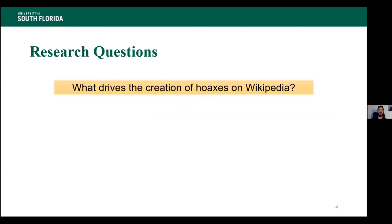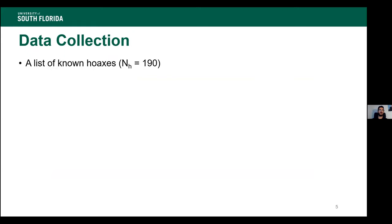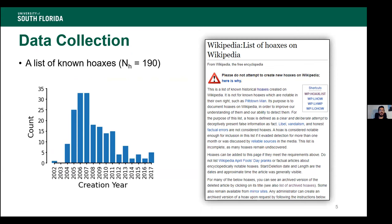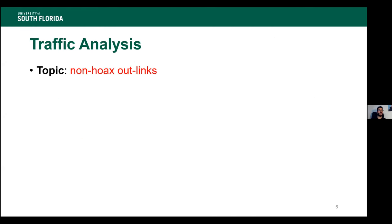To answer this, we examine whether online attention — traffic to Wikipedia toward a topic — increases the likelihood of hoax articles being created about it. We collected a set of 190 known hoax articles maintained by Wikipedia moderators: these are 'successful' hoaxes that evaded detection for more than one month or were discussed by media sources. We study traffic for a topic — defined as the non-hoax outlinks within a hoax article — over a 14-day observation window centered around the creation date: 7 days before and 7 days after. For each hoax we calculate the relative volume change, delta V over B, where V_B is the topic's median traffic 7 days before and V_A is 7 days after.